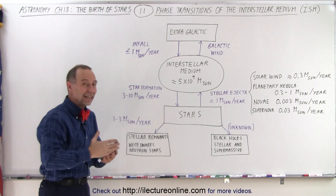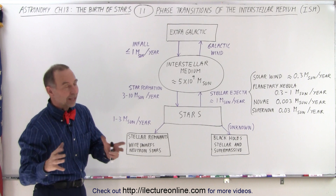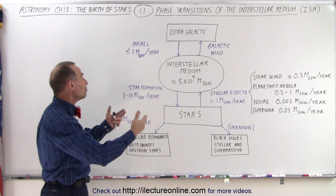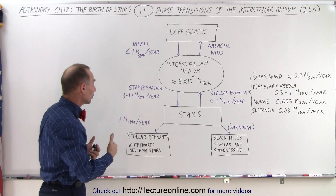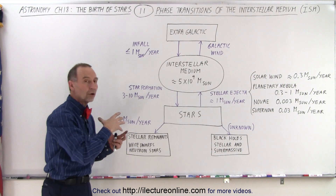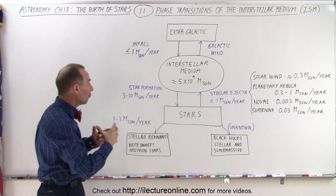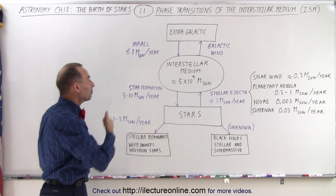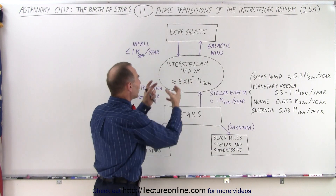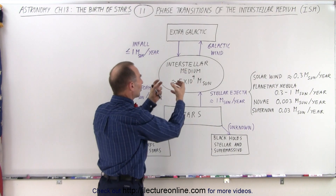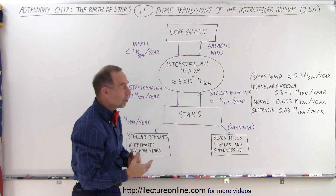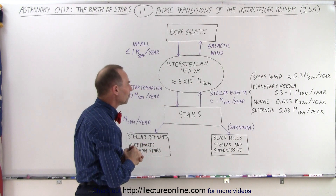The process takes millions of years, typically about 10 million years. So in a 10 million year period, we have 30 to 100 million stars being formed in that period of time — grabbed out of the interstellar matter and transitioned into stars in the process shown in the previous videos.